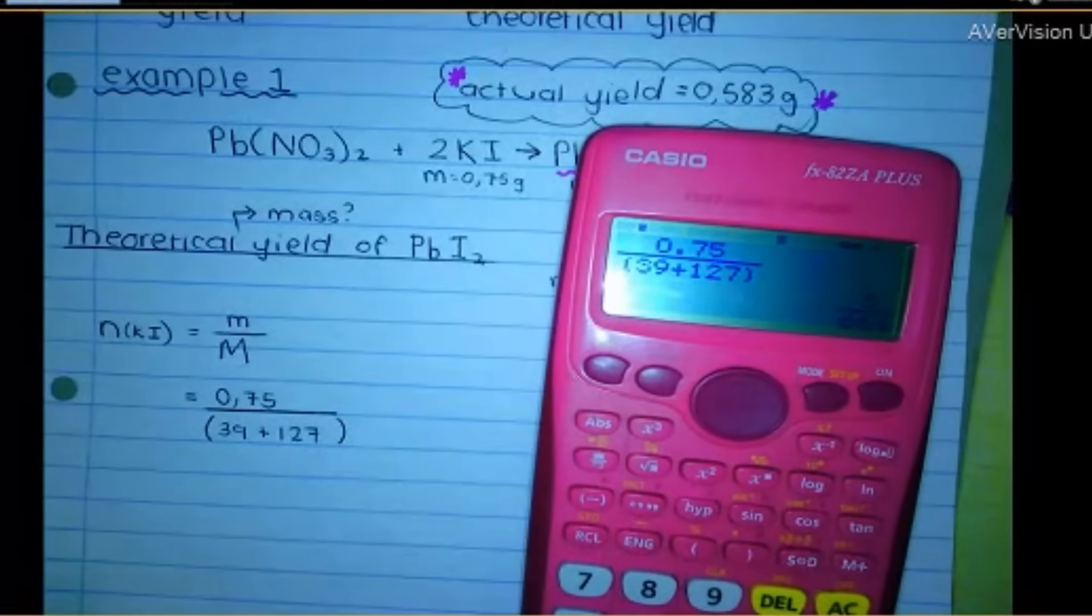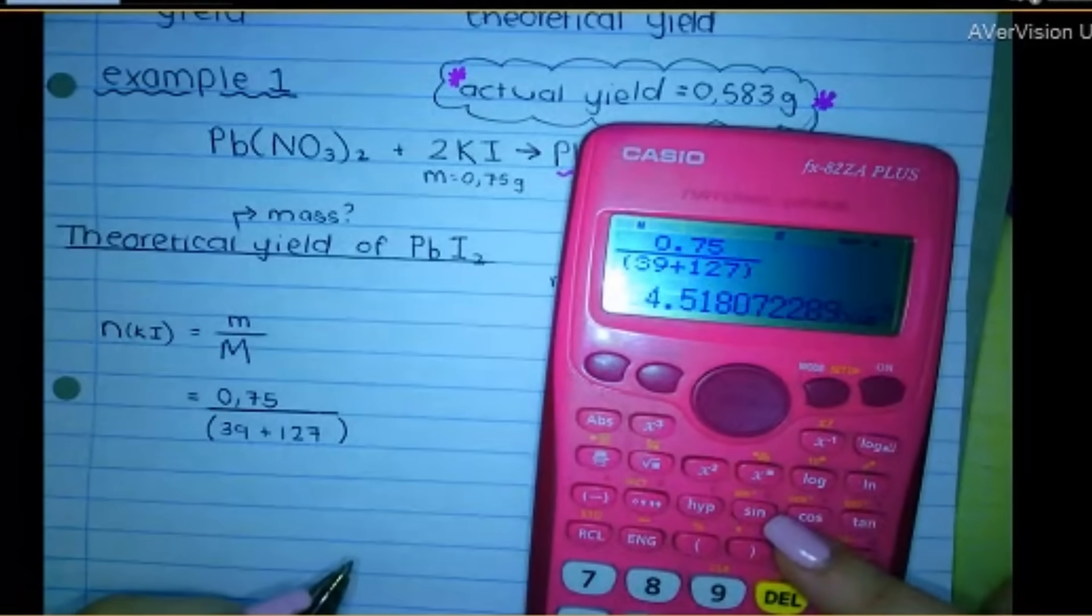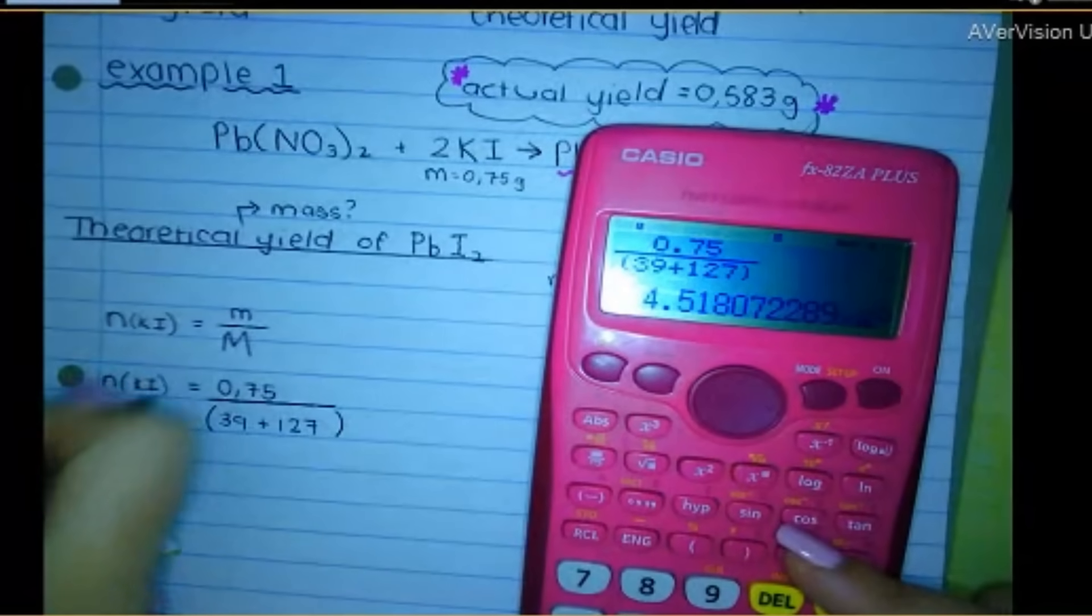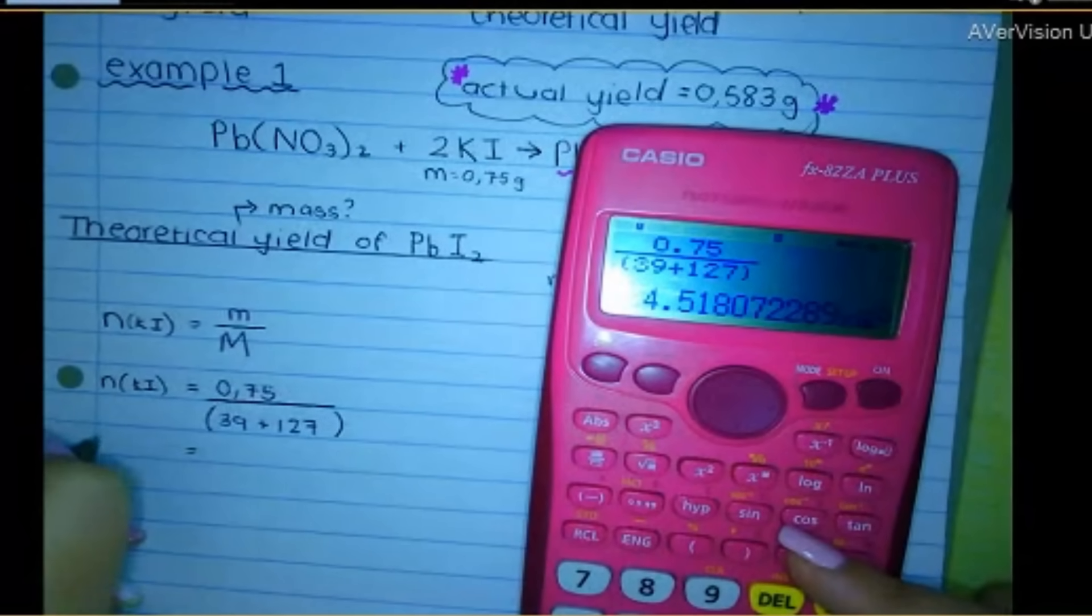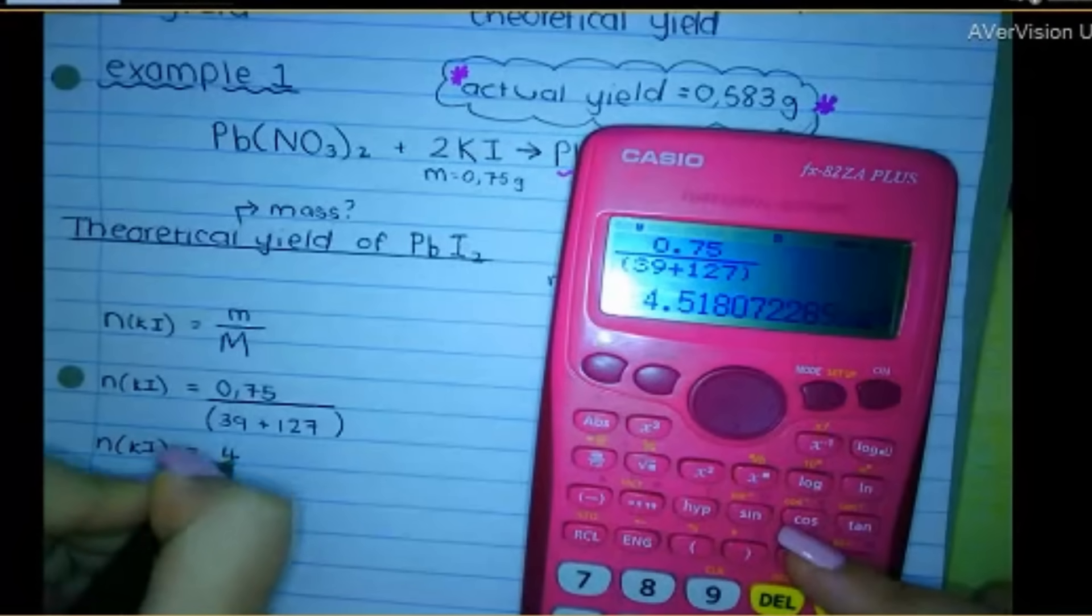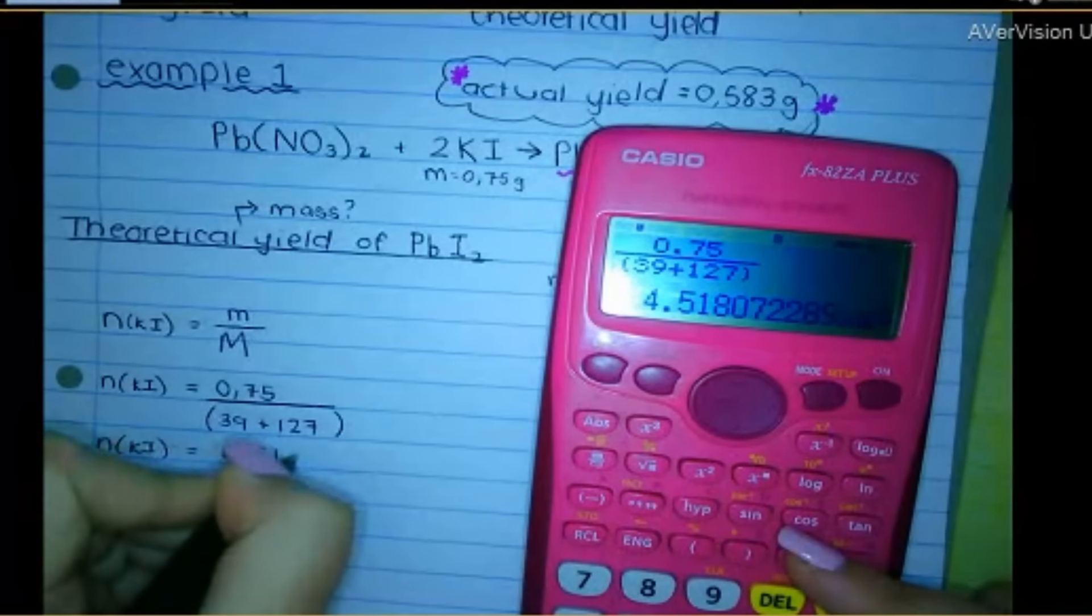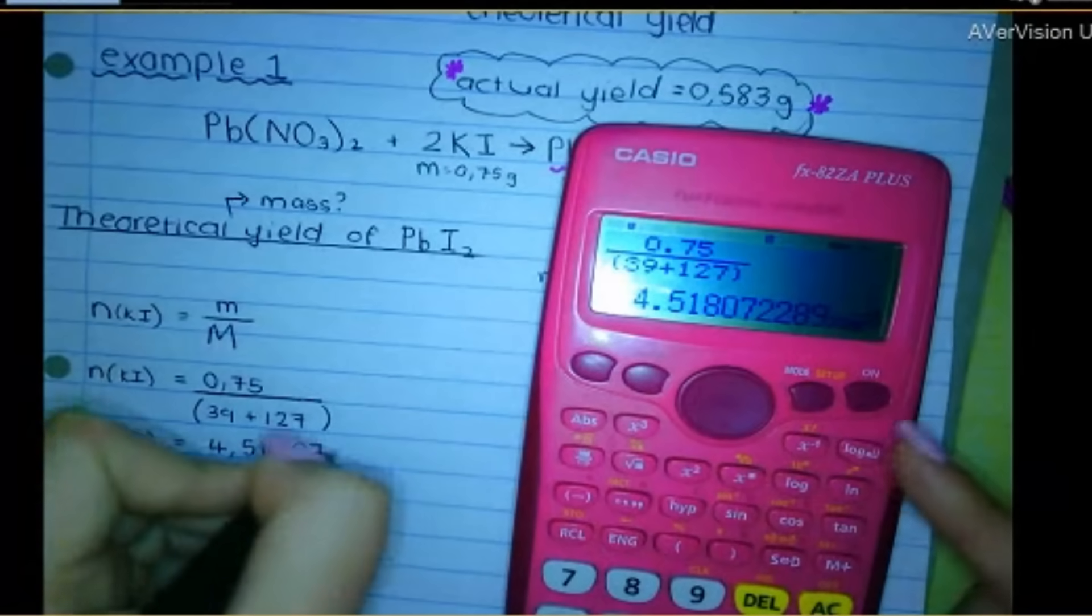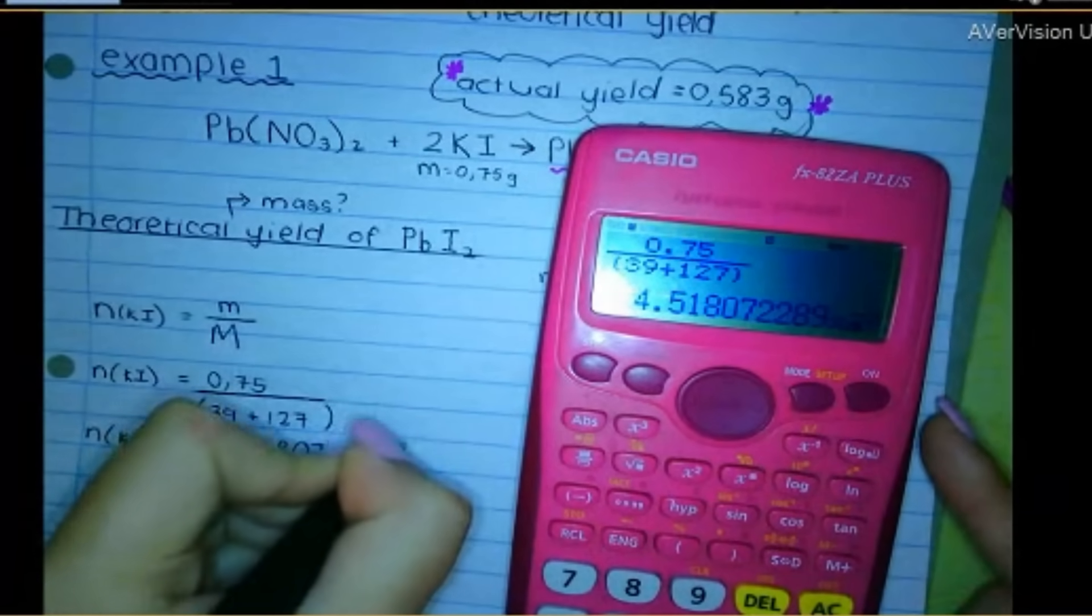So to work out the moles, I hate it when it gives it to me like this, but it's okay. Because this is an intermediate calculation, we're going to go like this.